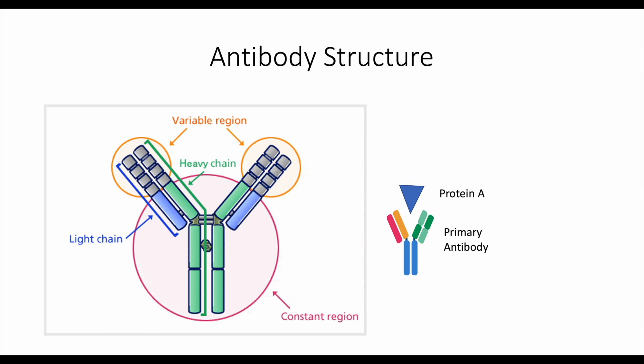You then have to use a special secondary antibody. This secondary antibody has a particular molecule attached to its constant region that, once the molecule is exposed to a specific chemical or light wave, will release a specific signal that microscopes can detect. The secondary antibodies are designed so that they can only bind to the primary antibody's constant region.